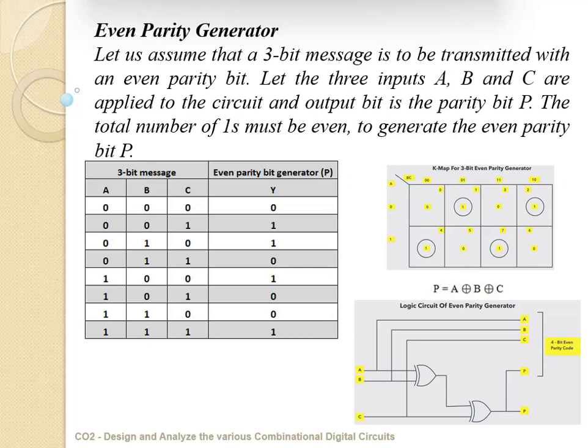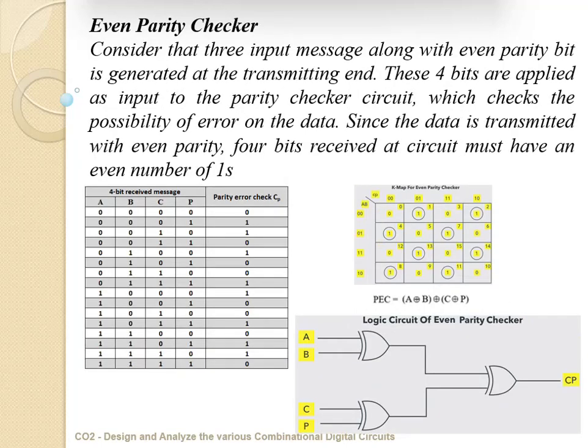How do we check on the other side? We have a circuit called the even parity checker at the receiving end to check whether the transmitted data is of even parity. Consider the 4-bit input messages along with the even parity bit generated at the transmitting end. These four bits are applied as input to the parity checker circuit, which checks the possibility of error in the data. Since the data is transmitted with even parity, the four bits received must have an even number of ones.